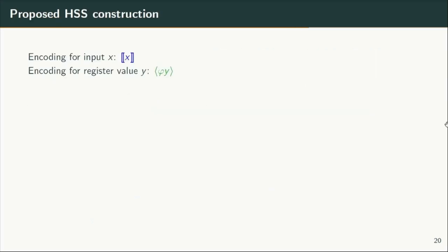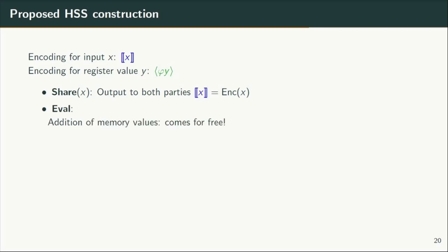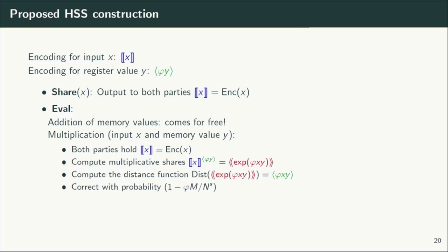Next, I'll summarize our entire HSS construction using the distance function we just defined. To share an input x, we output Damgård-Jurik encryptions of x to both evaluating parties. When evaluating the RMS structure, addition of memory values and multiplication by a constant come for free because each memory value is essentially additive shares of phi times y, where y is the memory value. To multiply an input x with memory value y, the parties exponentiate the encryption of x to additive shares of y, giving multiplicative shares of exp(phi·xy). Applying the distance function on these multiplicative shares, the parties obtain additive shares of phi times xy over integers with 1 minus negligible probability. To decode a memory value z, we subtract the additive shares and then divide by the private key phi.